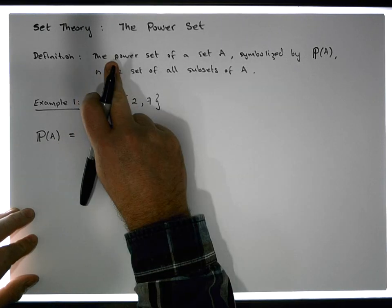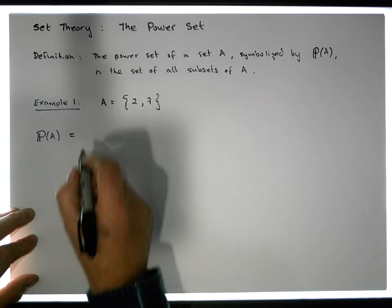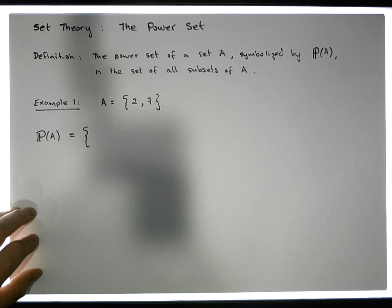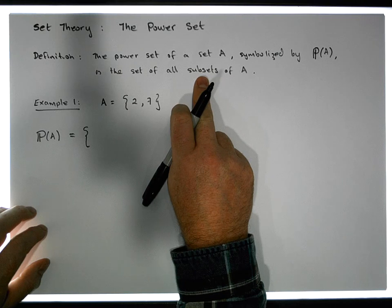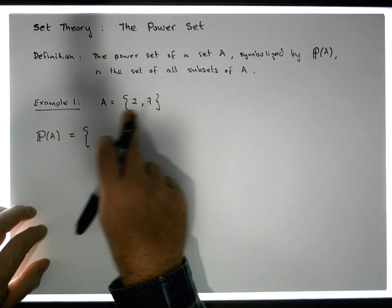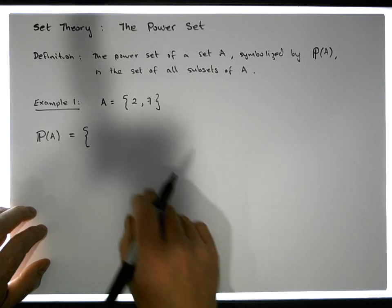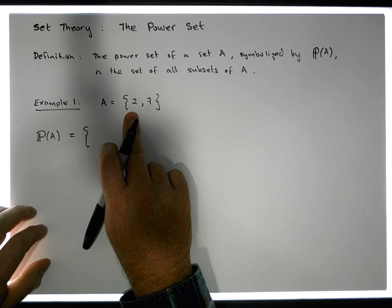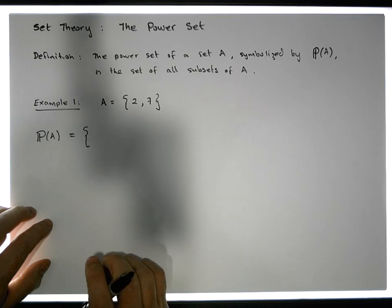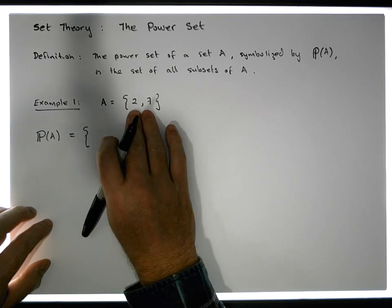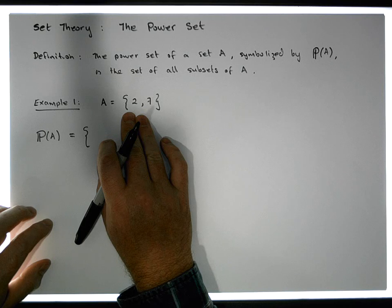By definition, the power set of set A, symbolized by P(A), is the set of all subsets. So the power set is itself a set, and it contains elements — specifically, all the subsets of A, meaning all possible subsets that can be constructed from A. Our strategy will be to choose the smallest possible set first, which is the empty set or null set. The empty set has no elements, but by definition it is a subset of all sets.